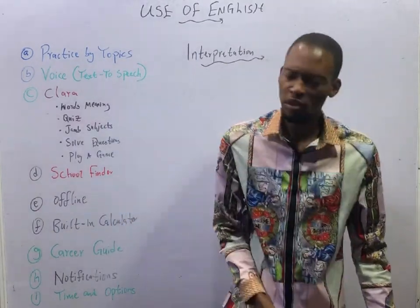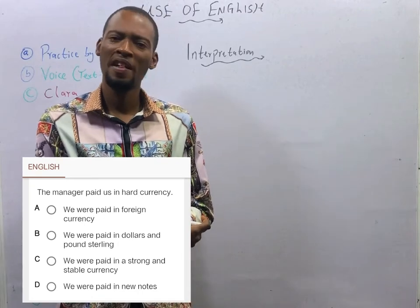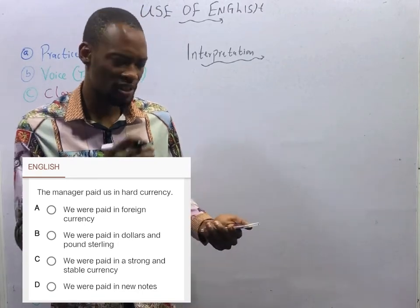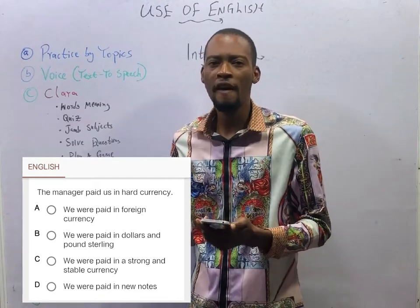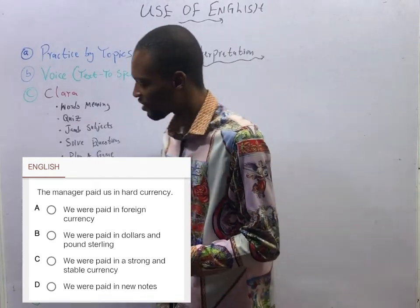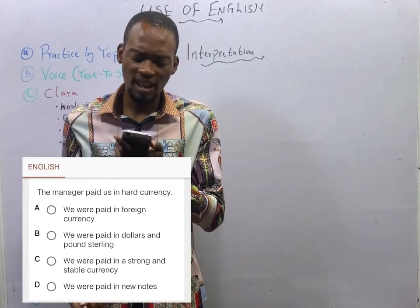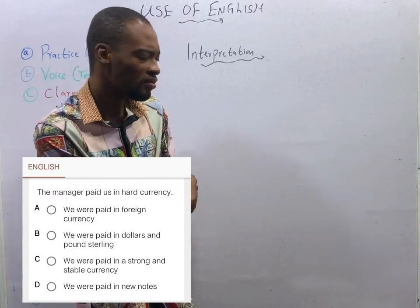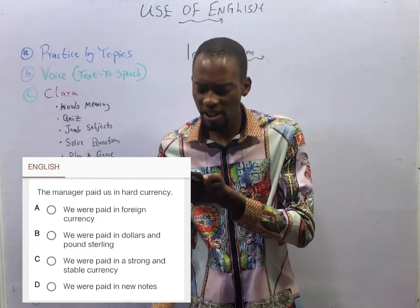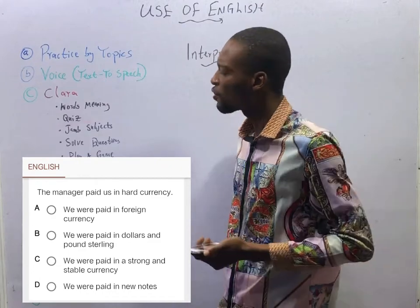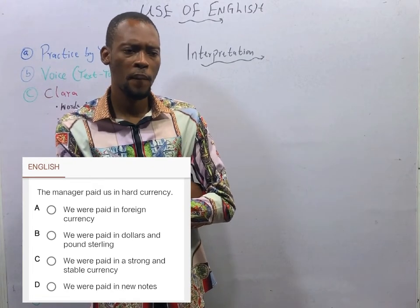The first question says: 'The manager paid us in hard currency.' What does it mean to be paid in hard currency? Option A: we are paid in foreign currency — if you say option A is correct, you are wrong. Option B: we are paid in dollars and pound sterling — that is not correct. Option C: we are paid in a strong and stable currency — if you say option C is correct, you are correct.